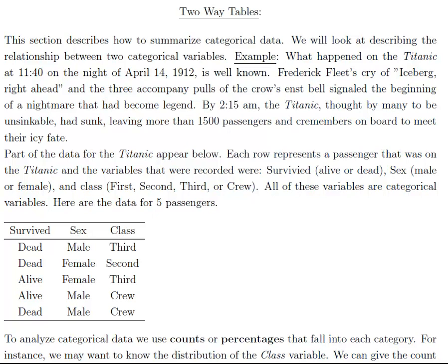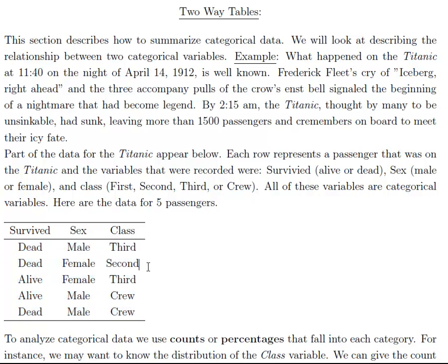We are going to be dealing with the following example, which has to do with the Titanic and the sinking of the Titanic. We have information on certain variables, such as whether or not a passenger survived, their gender, and their class. Here we have data from five passengers. The first passenger did not survive, he was a male, and he was from third class. This is just five of the passengers, but we have more data than that available.